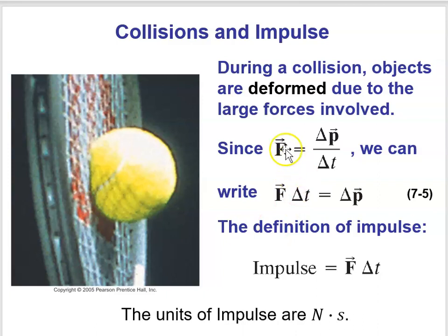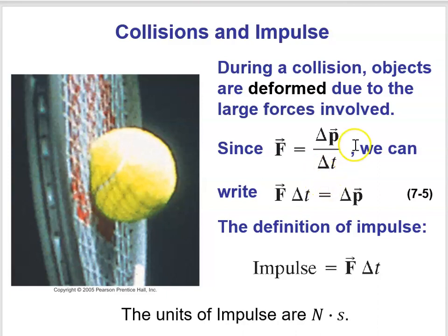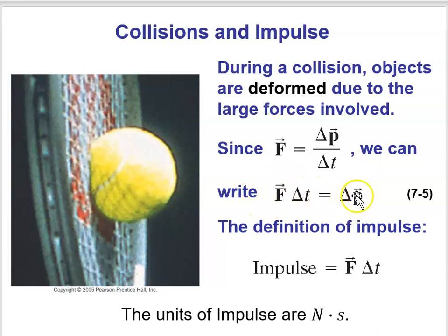So here, from Newton's second law, F is equal to delta P over delta T. But we could also rearrange that equation and multiply delta T on both sides. Then we would have F times delta T equal to delta P. This is an expression that's often referred to as the impulse.